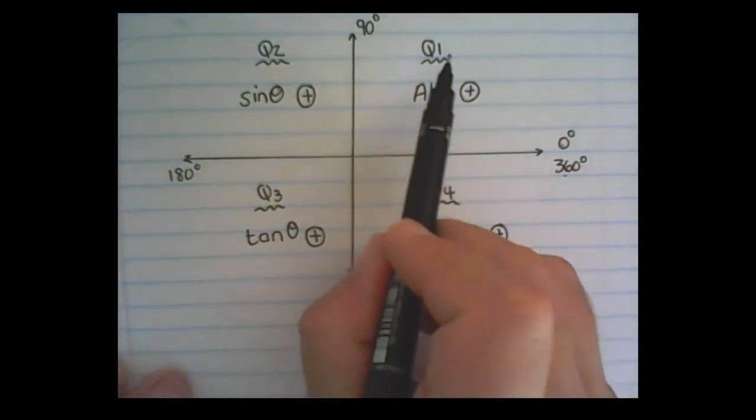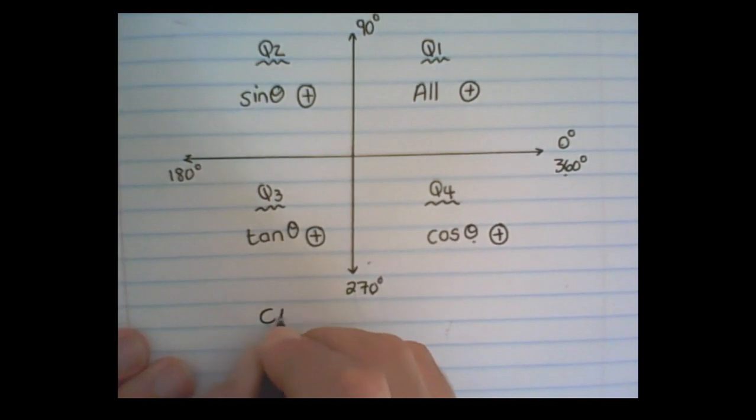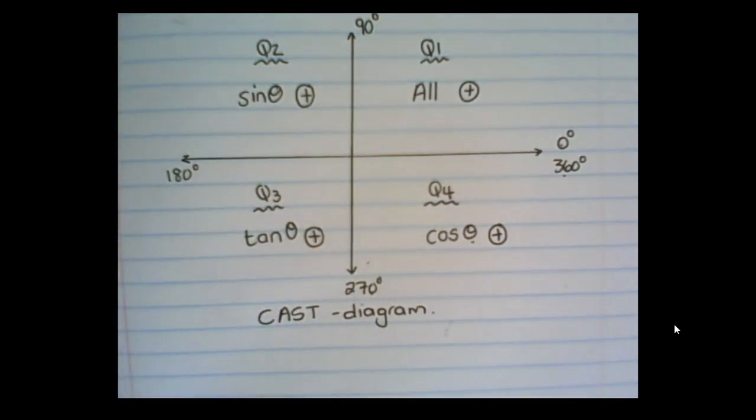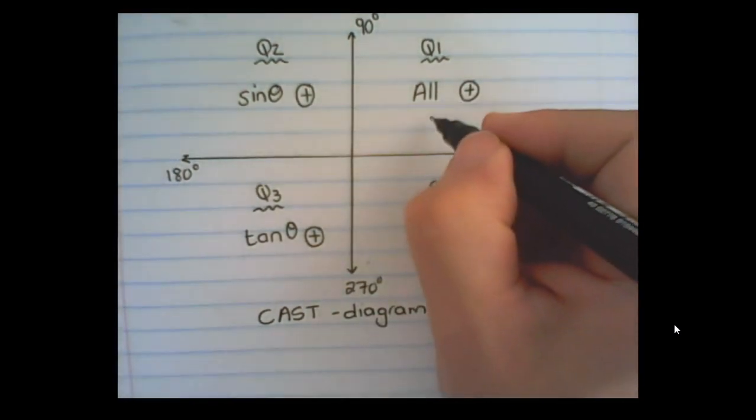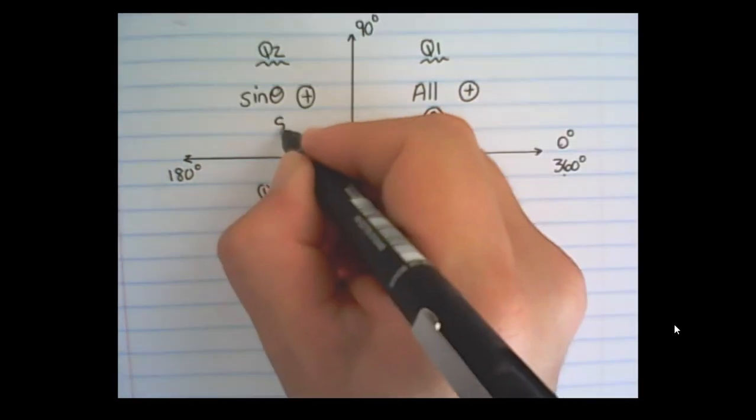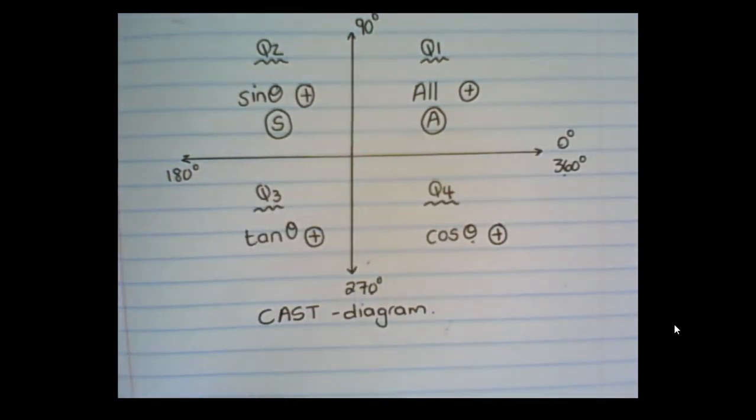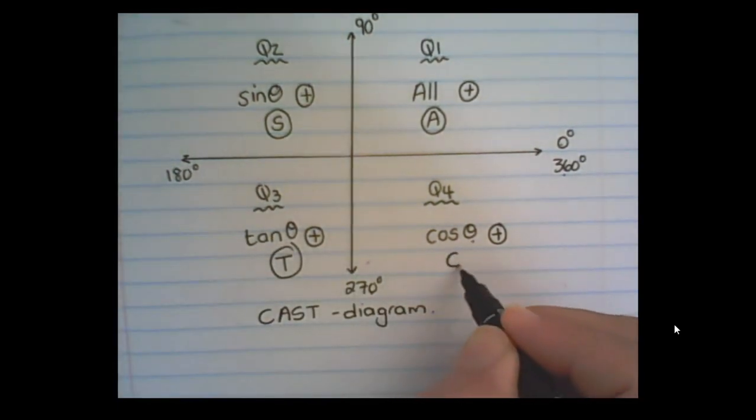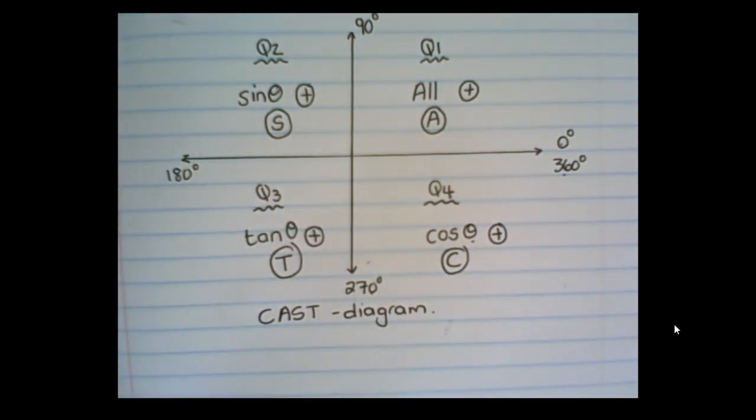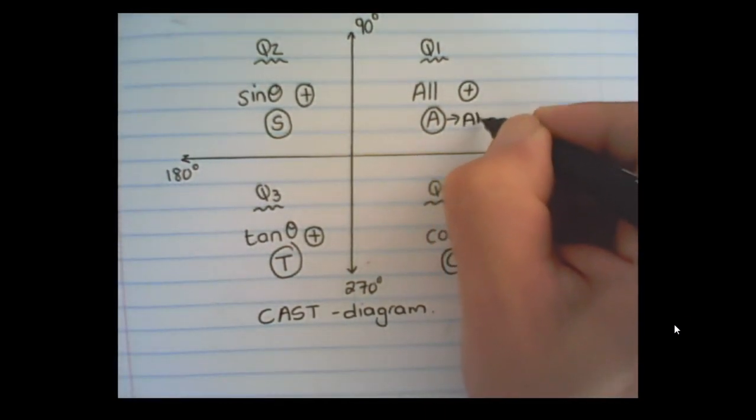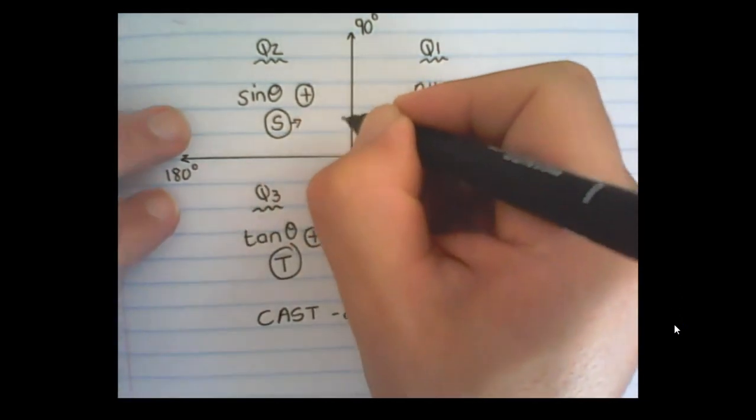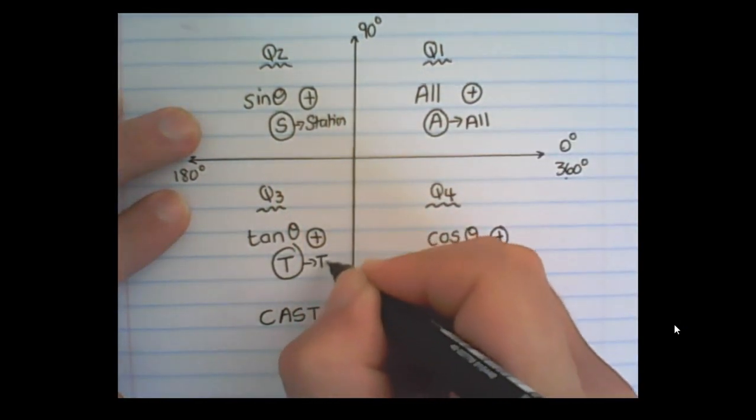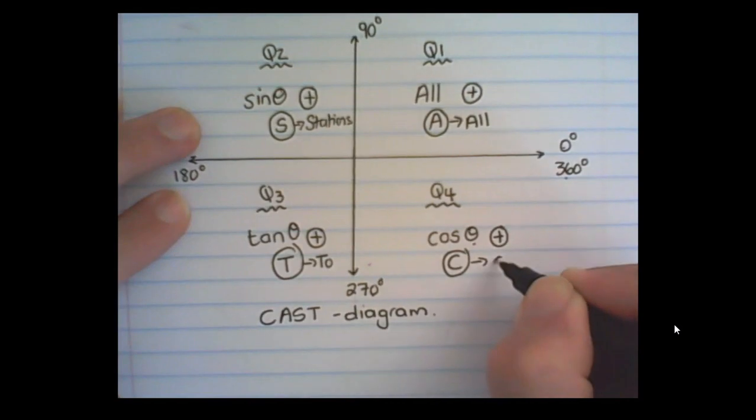And this is what we call a CAST diagram. You can also use an acronym to remember this. So we have an A for all, an S for sine, a T for tan, and a C for cos. And you can say, all stations to Cape Town.